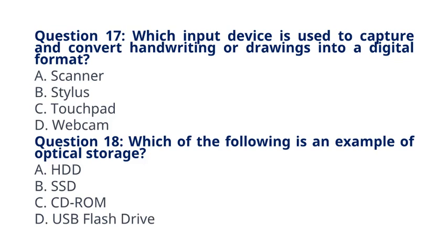Question 18: Which of the following is an example of optical storage? A. HDD, B. SSD, C. CD-ROM, D. USB flash drive. The correct answer to question 18 is option C: CD-ROM. Explanation: CD-ROM (Compact disk read-only memory) is an example of optical storage.